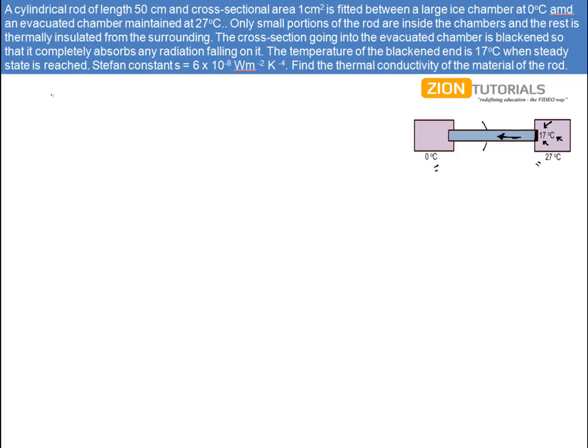So the concept is that energy flowing in this direction can be written as K, the thermal conductivity of the rod, into area of cross-section into temperature difference. Let's say this is temperature T₂, this is temperature T₁, this is the room temperature T₀.